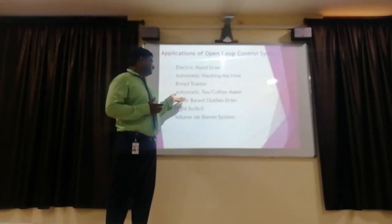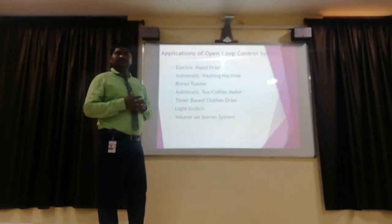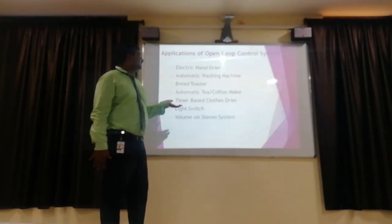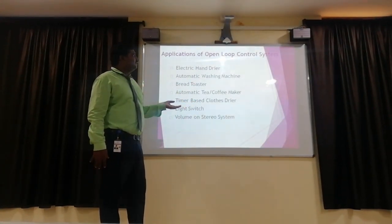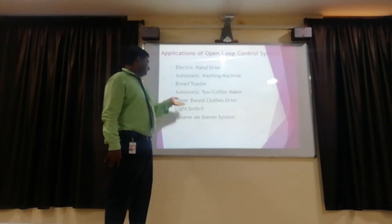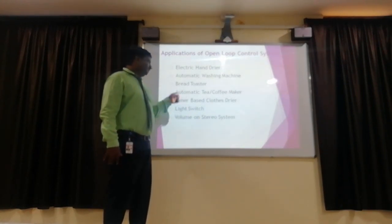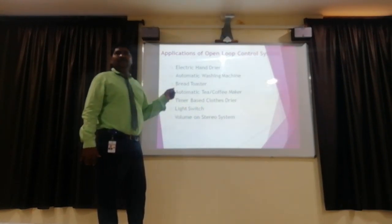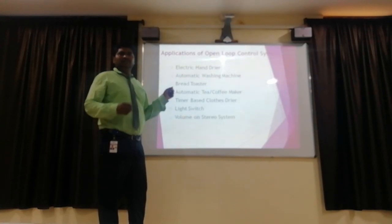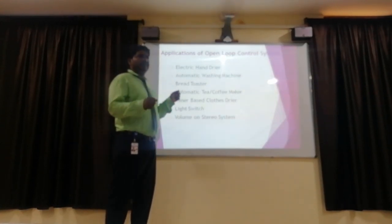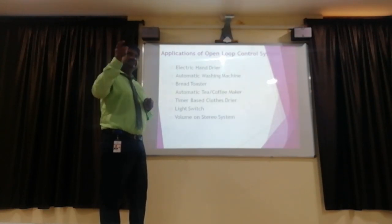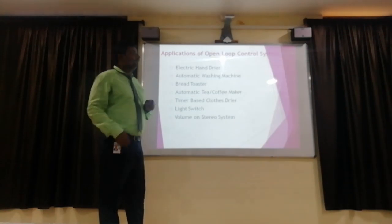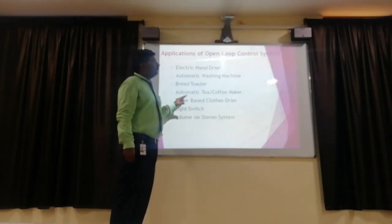For example, the bread toaster and automatic tea and coffee maker are common applications seen outside. In the home, light switches are common — the switch being turned on or off is the input command, and the flow of power supply through the circuit is the output command. This is an application of the open loop control system.